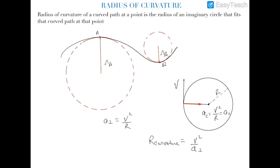In this video we are starting the radius of curvature. The radius of curvature is actually the instantaneous radius of any curved path. We know that the radius is defined for a circle, but a circle has a constant radius at all the points on its periphery. However, any curved path which is not a circle does not necessarily have a constant radius at all the points.